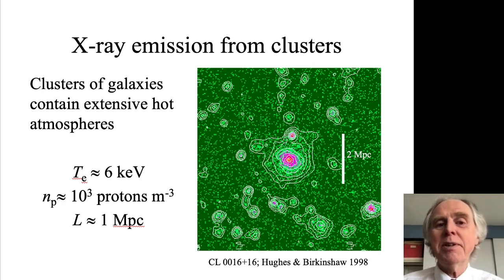The density of that atmosphere at its center is still pretty small, maybe a thousand protons per cubic meter, and because the gas is neutral, roughly a thousand electrons per cubic meter. The gas temperature is maybe six kiloelectron volts, and the scale size of one of these clusters is maybe a megaparsec. The picture on the right shows one such cluster, the cluster 0016 plus 16, which lies at a redshift more than a half. As you can see by the scale bar, it is around two megaparsecs in diameter.